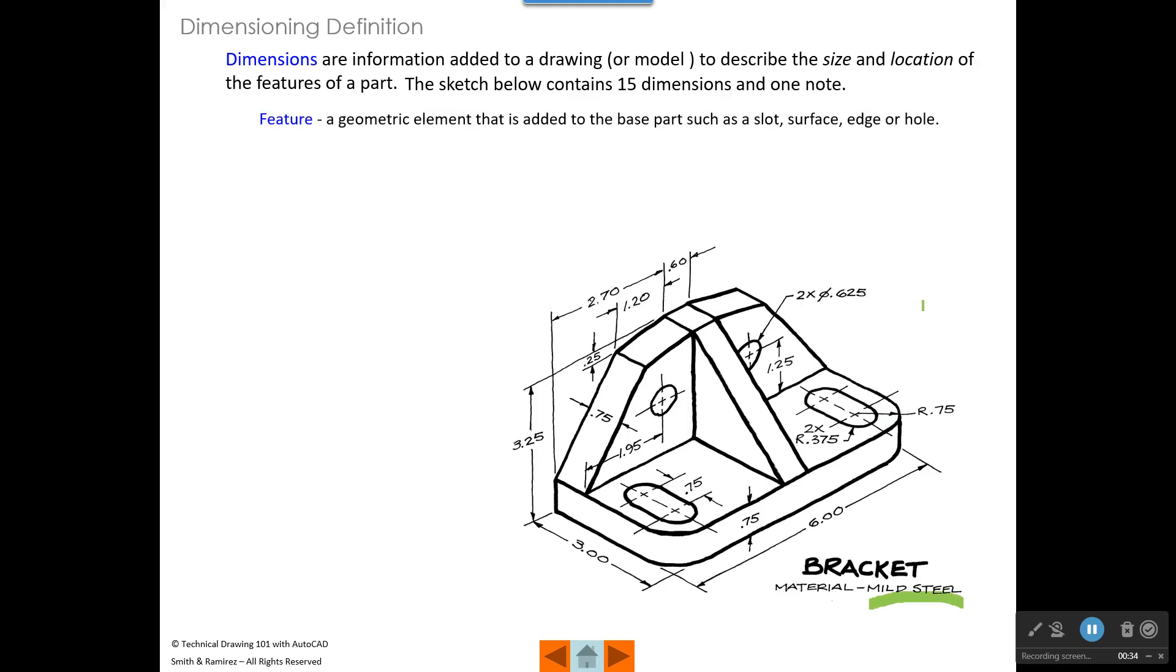The dimensions give us the size and location and orientation of features. A feature is a geometric element added to a base part, such as a slot, a surface, an edge, or a hole. Dimensions may also define form like flatness, straightness, and orientation like parallelism and perpendicularity of the features of the part. But we're going to focus more on dimensions that detail the size and location of features.